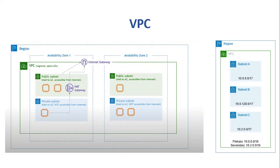If you want to know how many IP addresses are available for a given CIDR block — for example, 10.0.0.0/16 — there is an open website on the internet where you can type it in and it will tell you exactly how many IP addresses will be available to you.